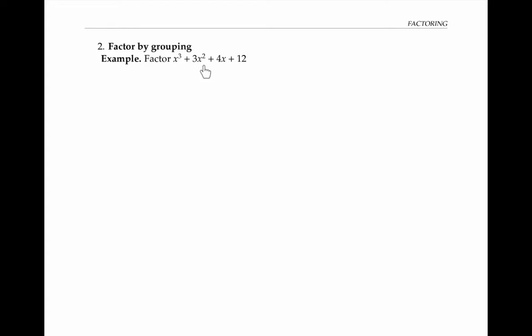The next technique is factoring by grouping. In this example, notice that we have four terms. Factoring by grouping is a handy method when you have four terms in your expression. In order to factor by grouping, I'm first going to factor out the greatest common factor of the first two terms, and then separately factor out the greatest common factor of the last two terms.